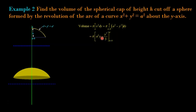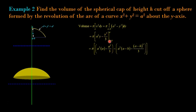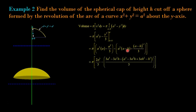The volume integral is V = π times the integral from a − h to a of x² dy = π times the integral from a − h to a of (a² − y²) dy. Integrating: π [a²y − y³/3] evaluated from a − h to a. Substituting the upper limit y = a: a³ − a³/3 = 2a³/3. Substituting the lower limit y = a − h: a²(a − h) − (a − h)³/3.